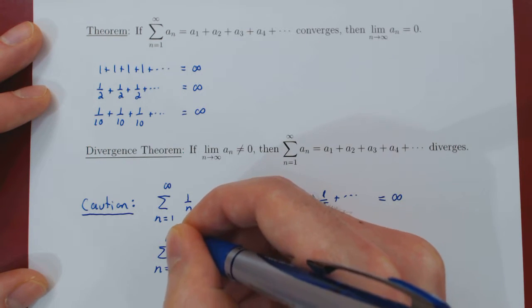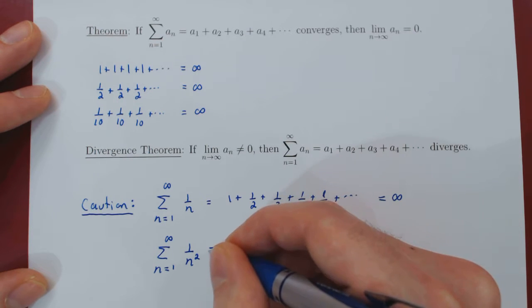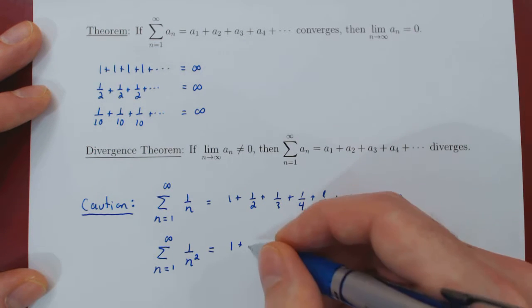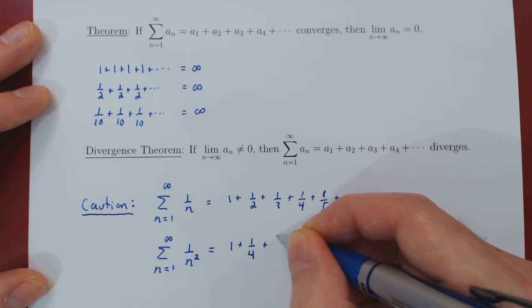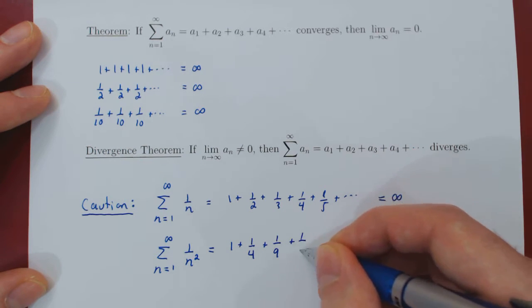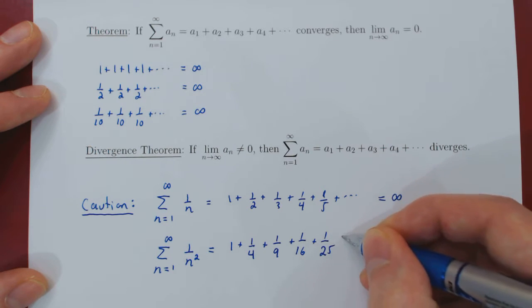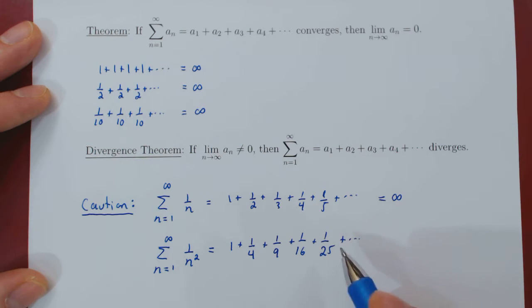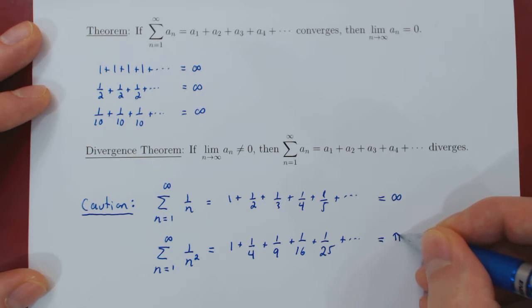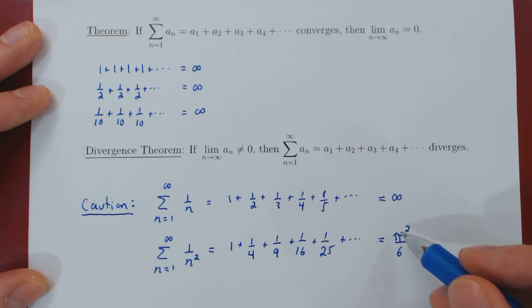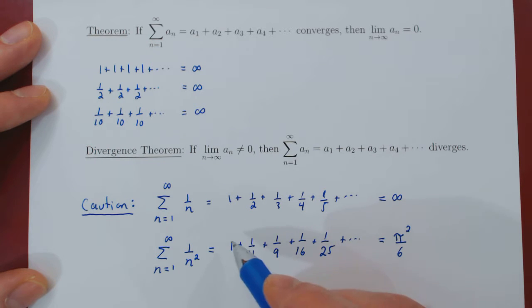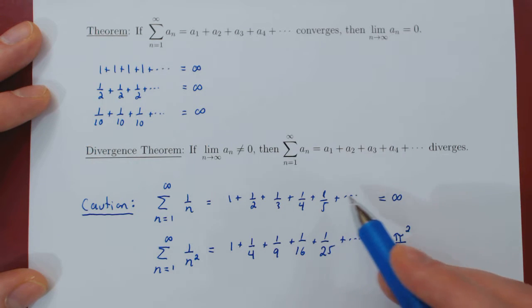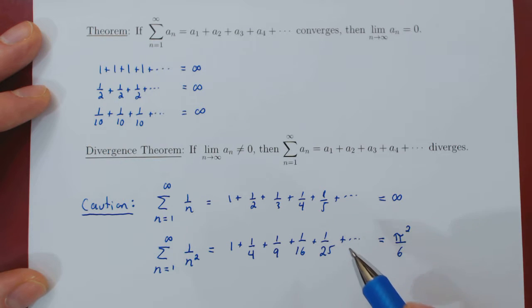Let's now look at a similar sum, but now summing the reciprocals of the squares. So we get 1 over 1 squared, which is 1, plus 1 over 2 squared, which is 4, plus 1 over 3 squared, which is 9, plus 1 over 4 squared, which is 16, plus 1 over 5 squared, which is 25, and so on. In this case, the infinite series will converge — and surprisingly, it converges to exactly pi squared over 6. The fact that this is the exact value is not a trivial result, but we will also prove later on that this series does converge.